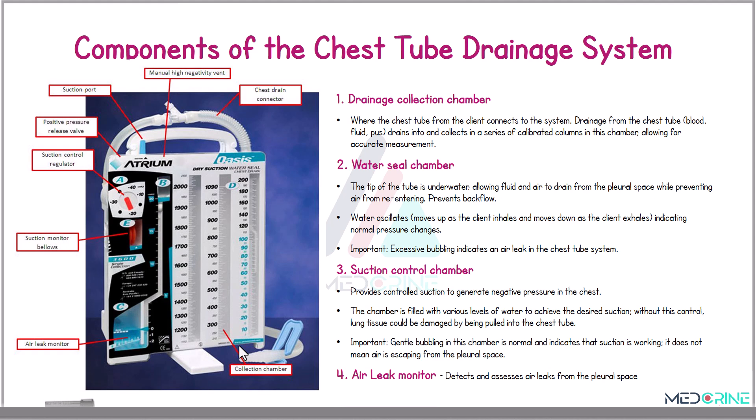It's important to know that excessive bubbling in the water seal chamber indicates an air leak in the chest tube system. Another component is the suction control chamber, which provides controlled suction to generate negative pressure in the chest. This chamber is filled with various levels of water to achieve the desired suction. Without this control, lung tissue could be damaged by being pulled into the chest tube. Gentle bubbling in this chamber is normal and indicates that suction is working; it does not mean air is escaping from the pleural space.